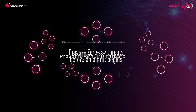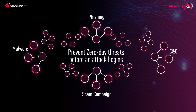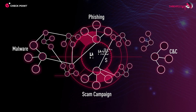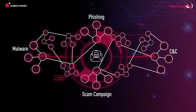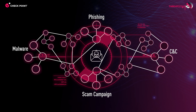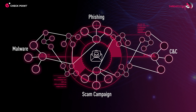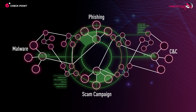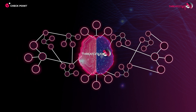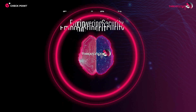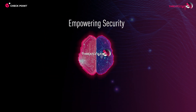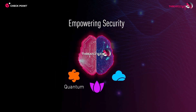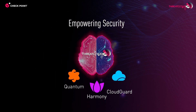Threat Cloud Graph aims to prevent zero-day threats before an attack begins by analyzing shared relations between new entities and known malicious domains and IPs. Integrated into Threat Cloud AI, it empowers the security of Checkpoint Quantum, Harmony, and Cloud Guard users.